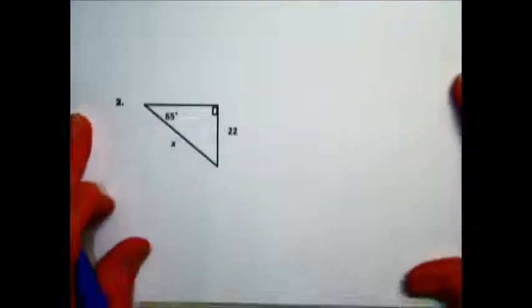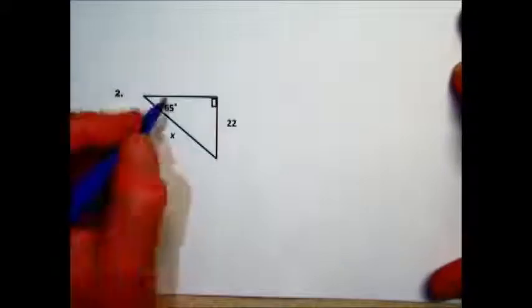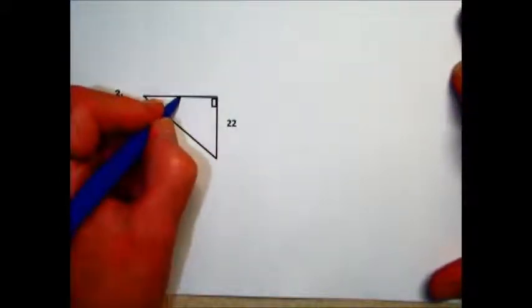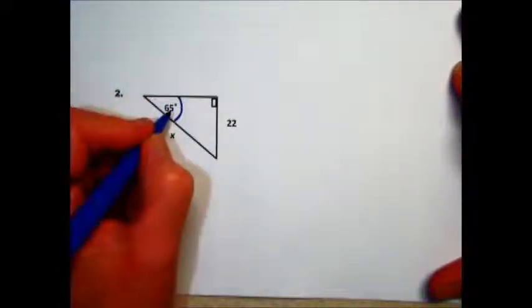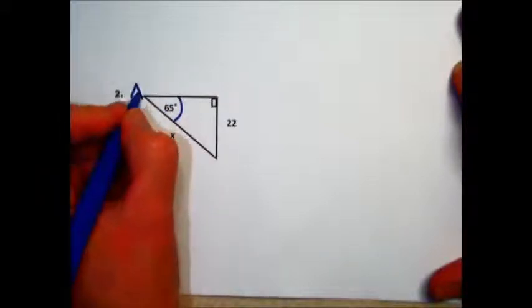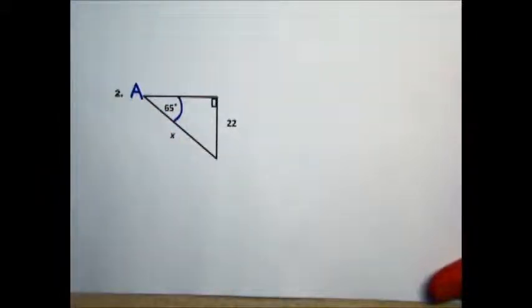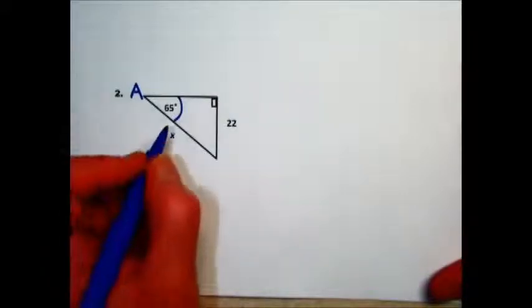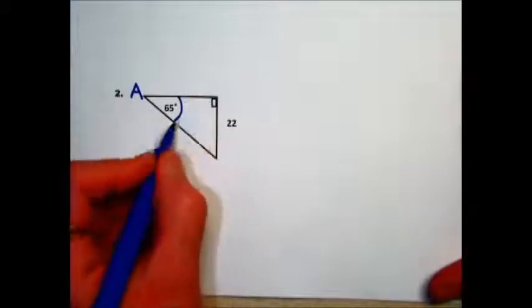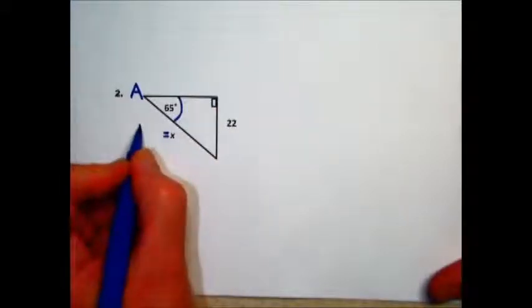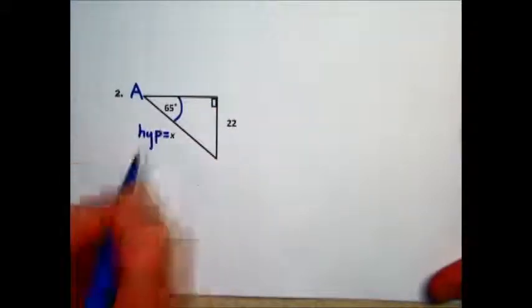Problem number two. They have one of the acute angles in this right triangle identified with a length. We'll use that as our reference angle or home base. Next, we'll identify and label the sides of the right triangle, starting with the side opposite the right angle, the longest side, we'll label hypotenuse.